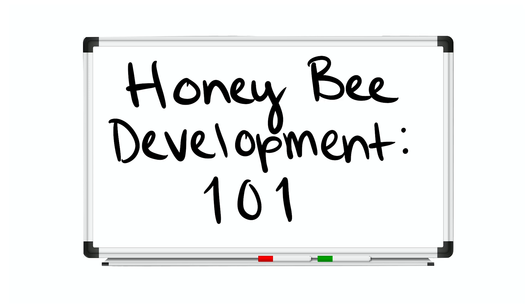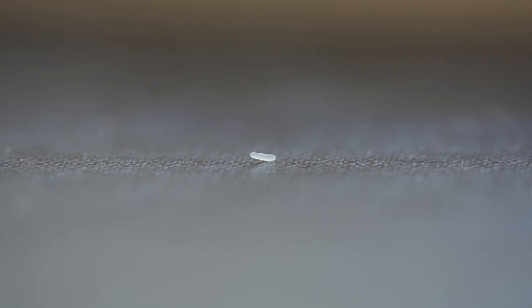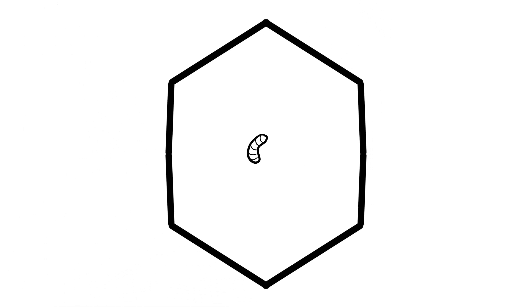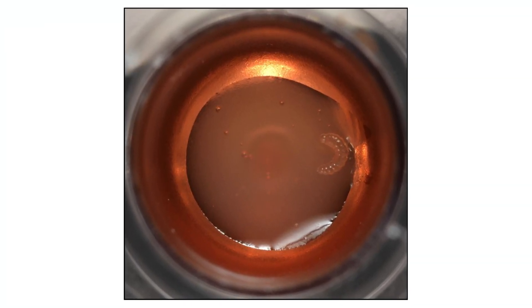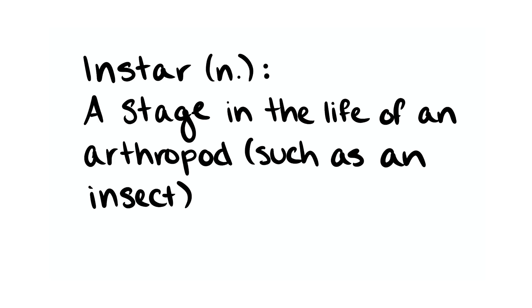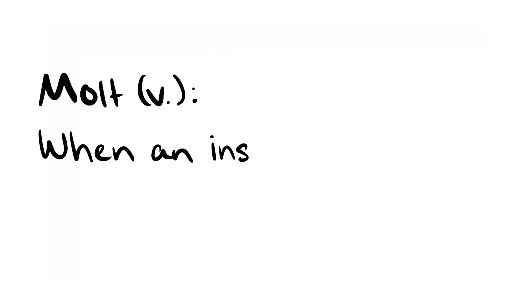There are some complex topics from an entomology perspective worth diving into. Starting again from the egg: inside that egg is a developing embryo that ultimately becomes a larva. That larva is what we call a first instar larva — the first developmental stage. In entomology, instar means the period between molts. A molt is when an insect sheds its exoskeleton, its skin. Just as snakes shed their skin so they can grow, insects must shed their exoskeleton in order to grow — that shedding is called a molt.